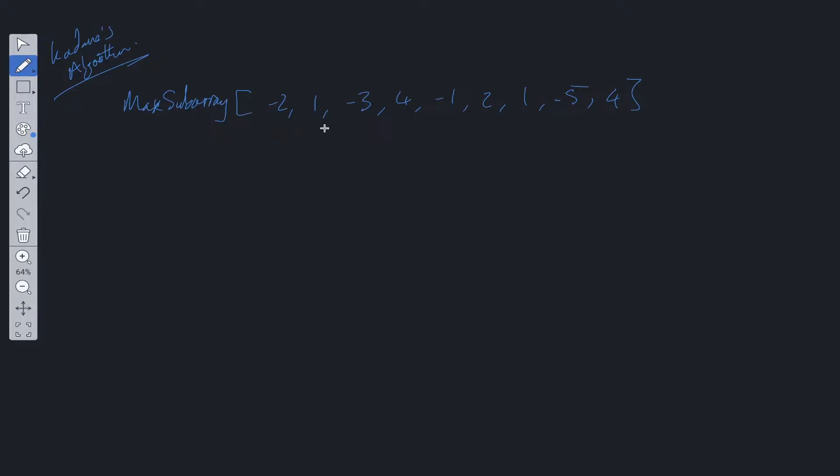Now a subarray is just a contiguous sequence within this array. This can be considered a subarray, this can be considered a subarray, this can be considered a subarray. However, something like this cannot be considered a subarray because it is no longer contiguous because we are missing this piece right here.